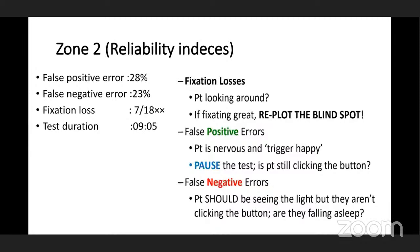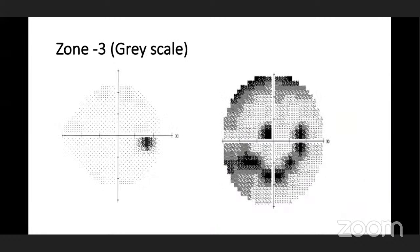False negative errors occur when, even with a bright light, the patient does not press the button. Reasons include tiredness, inattentiveness, or fatigue. The normal value is less than 33%; above 33% is unreliable. Zone three is the grayscale, where we check the density of color. The density alone does not confirm abnormal visual field — it provides only a gross identification of where visual field loss may be.